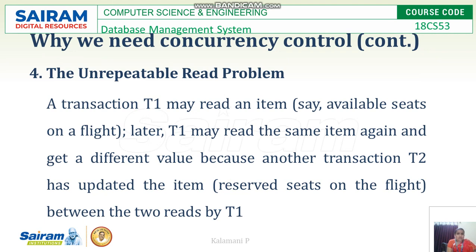The last problem is the unrepeatable read problem. Transaction T1 may read an item, then later read the same item again and get a different value because another transaction T2 has updated it. For example, when checking flight ticket availability you see 10 tickets, but by the time you complete your booking transaction, someone else has booked 2 tickets and the count now shows 8.